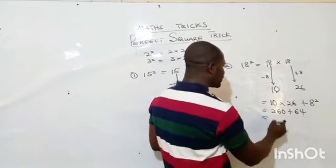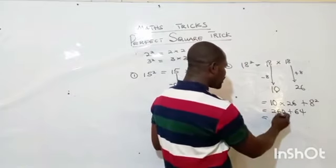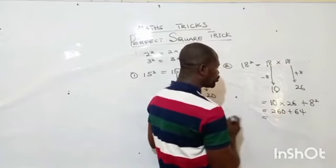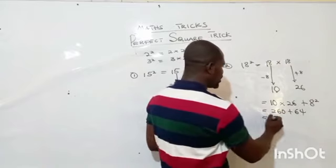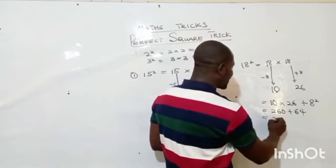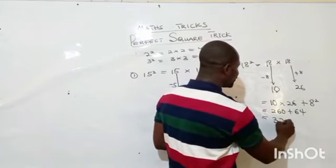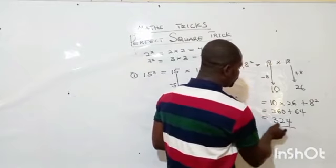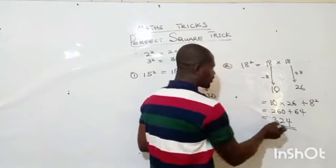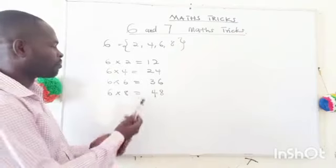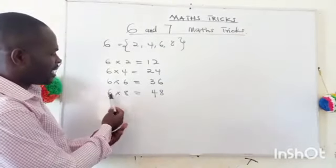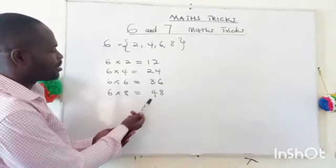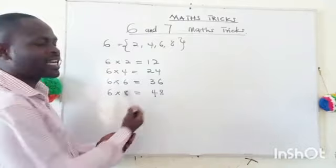When you add 64 to 260 you are going to get 324. So 18 squared equals 324. When you look at the 6 times table you see 6 times 8, and notice the 8 at the end — the pattern is 1, 2, 3, 4.